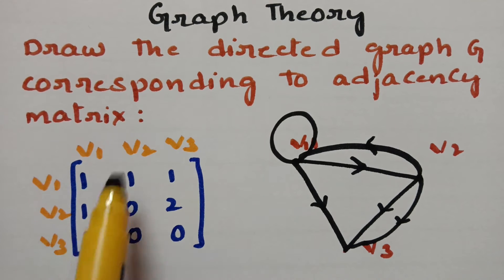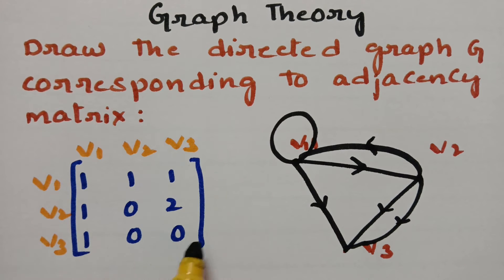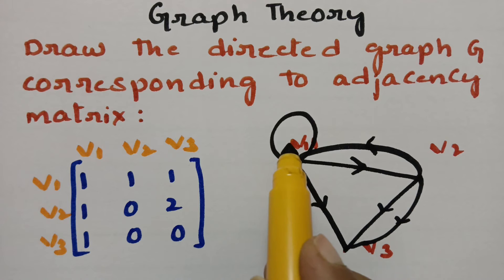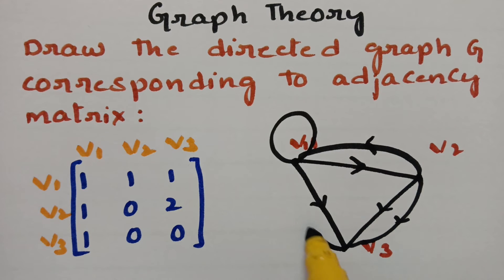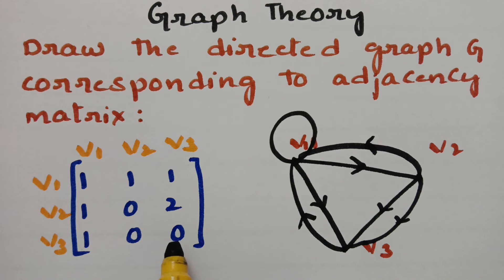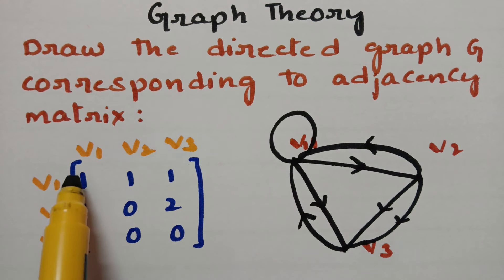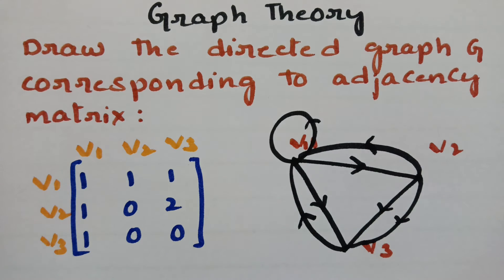Next, from V3 it has relations with three vertices: V1, V2, and V3. V3 is making an edge with V1 — there is already an edge but it is towards V3, so if I make an edge it should be an outward edge with direction towards V1. There is no relation with V2 and V3. Whenever we have 1, we have to take an outward edge.